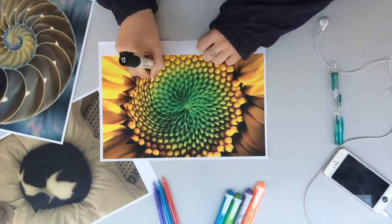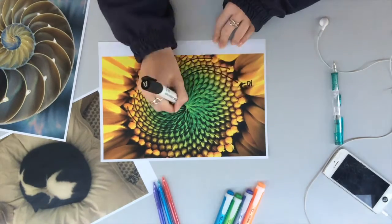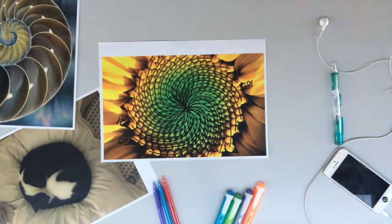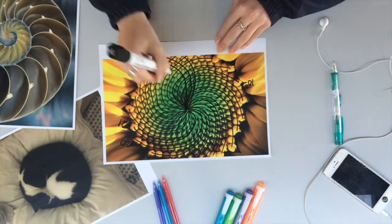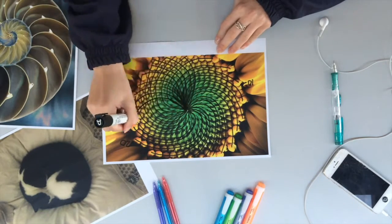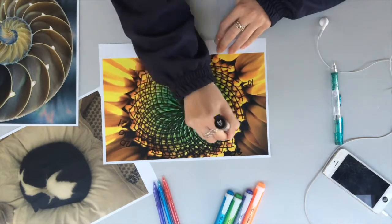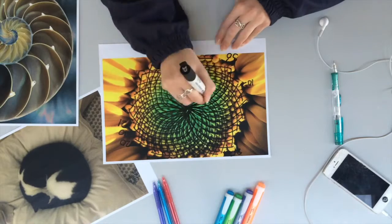[Counting spirals on object: 1, 2, 3, 4, 5, 6, 7, 8, 9, 10... continuing through multiple counts... reaching 21, then 34.]